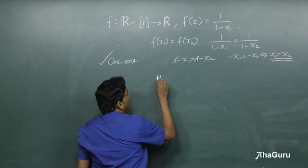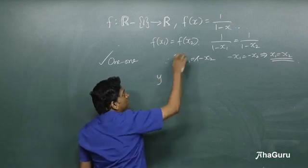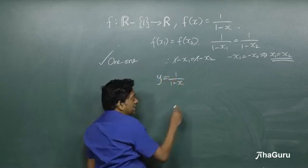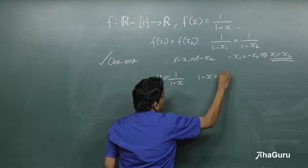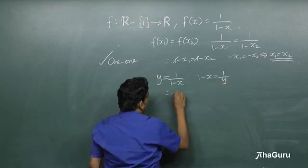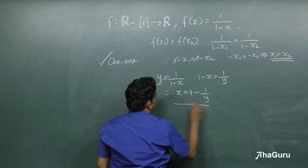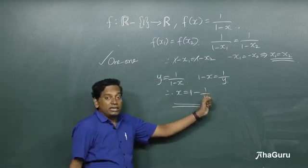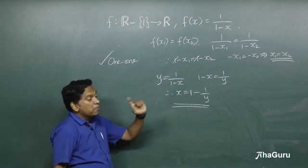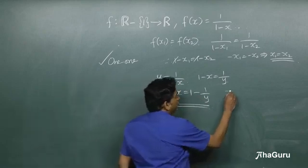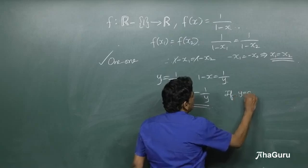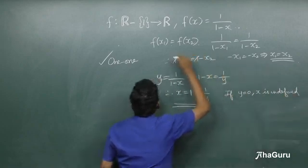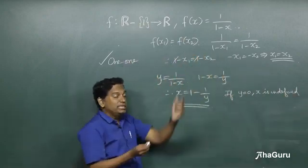For onto, we need to check whether every y belonging to the real numbers has a pre-image. Let y = 1/(1-x), then 1-x = 1/y, so x = 1 - 1/y. It looks like for every real number y we can find x, but the catch is that if y = 0, then x is undefined — meaning no element gets mapped to 0.